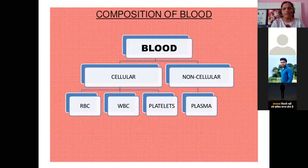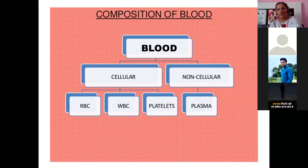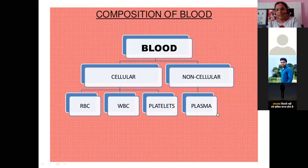In revision: we have studied blood and its composition. Blood is a fluid connective tissue. The composition includes cellular components — RBC, WBC, and platelets — and the non-cellular component, which is plasma. These are the main components of blood.